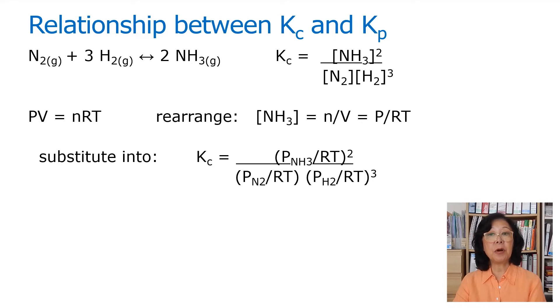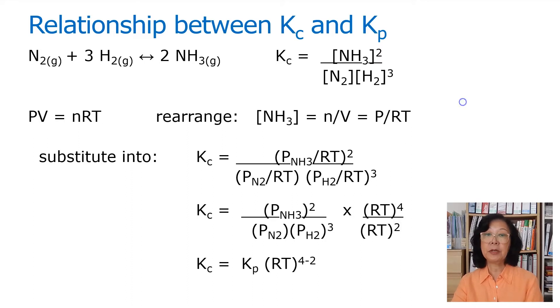We can substitute all these P over RT terms into the concentration term in the Kc expression. And then we're going to group all the partial pressures together and RT terms together. So we now have Kc is actually equal to Kp times RT to the power of 4 minus 2 for this particular reaction.